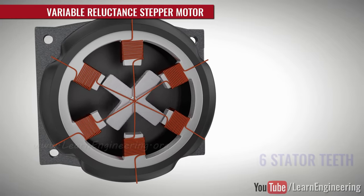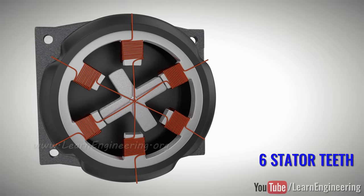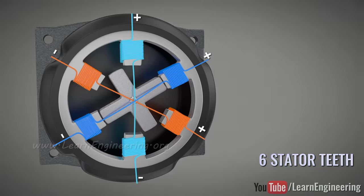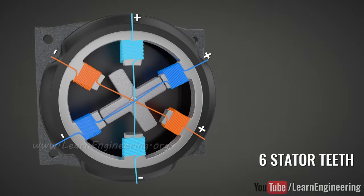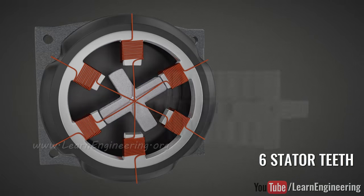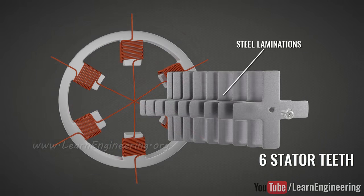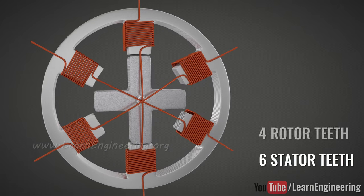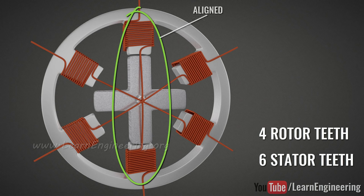This motor has six stator teeth and can be energized with three separate DC power sources. The rotor is made of a stack of steel laminations. It has a different number of teeth than the stator, four in this case. This is done intentionally so that only one pair of rotor teeth is aligned with the stator at a time.